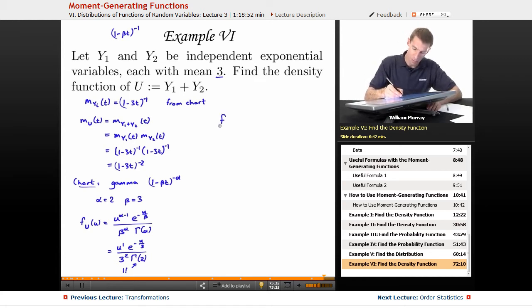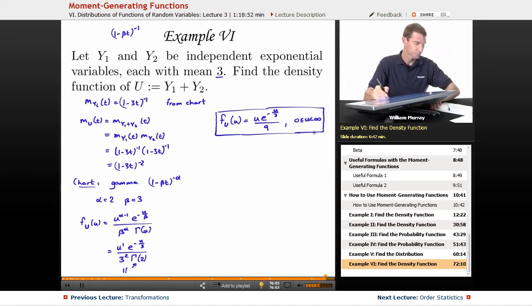So let me simplify that. F sub u of u is ue to the negative u over 3 divided by 3 squared is 9. Oh, and my range for gamma distribution is u goes from 0 to infinity. So I found my density function for u. And that's it.